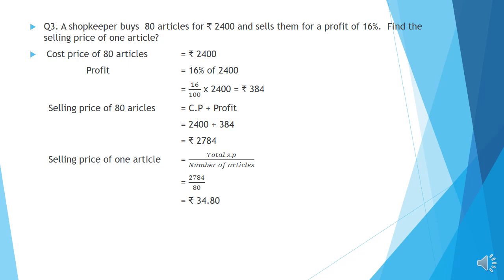Question number 3. A shopkeeper buys 80 articles for Rs. 2400 and sells them for a profit of 16%. Find the selling price of one article. Cost price of 80 articles is Rs. 2400 and profit is 16%. Profit equals 16% of Rs. 2400, that is 16 by 100 into 2400. The two zeros cancel, leaving 16 into 24, which gives 384. So profit is Rs. 384.